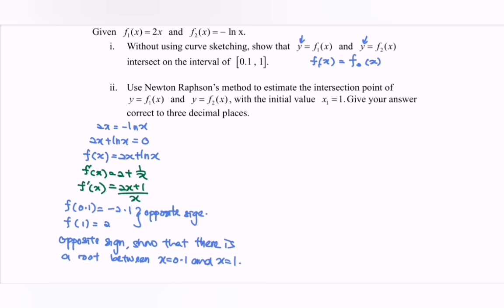Next, use Newton-Raphson method to estimate the intersection point with initial value x₁ = 1. Give your answer correct to 3 decimal places. Substitute: x₂ = 1 - [2(1) + ln(1)]/[2(1) + 1] = 0.33333...